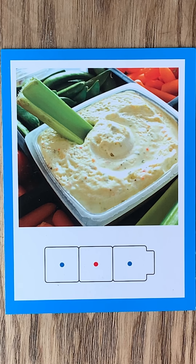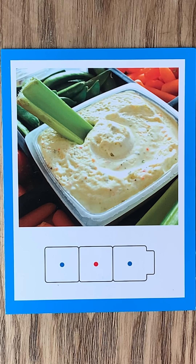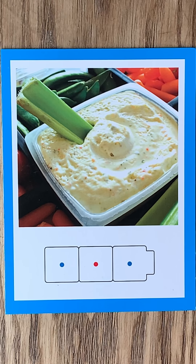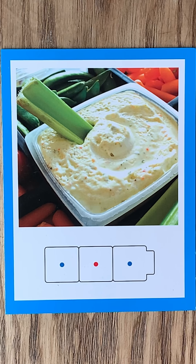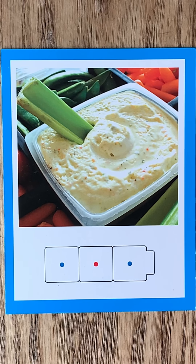We're going to practice playing a CVC — consonant vowel consonant — game today. I'm going to post different pictures up here and tell you what the word is. I'd like you to write the word in your homework journal or on a piece of paper, and then we're going to number them 1 to 10. If you need to take a moment to number ahead of time, you can do that now.